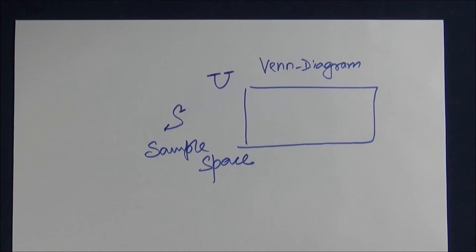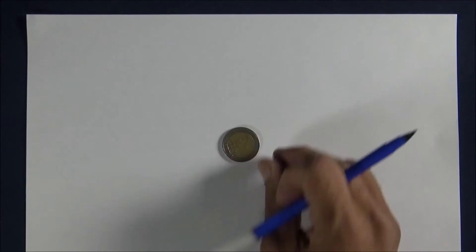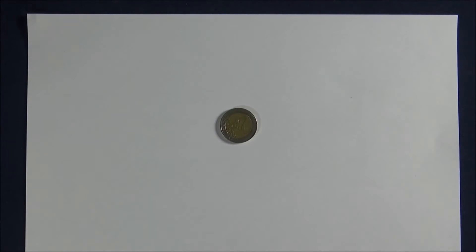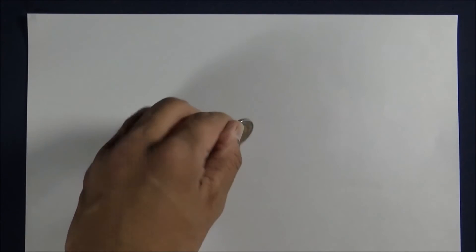Now I'll explain the sample space of coins, dice, and playing cards. You can see that we have a coin which has two sides: tails and this side is heads. This is a pound with the denomination two.